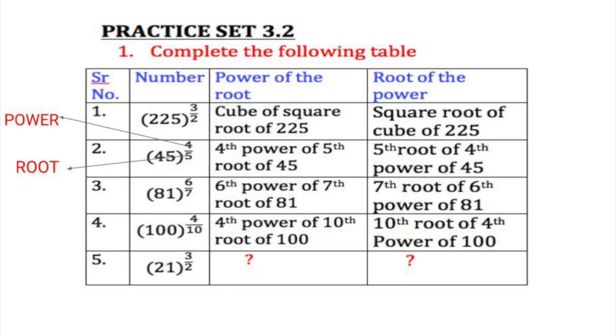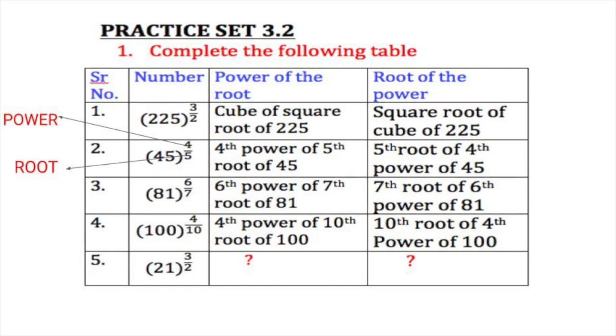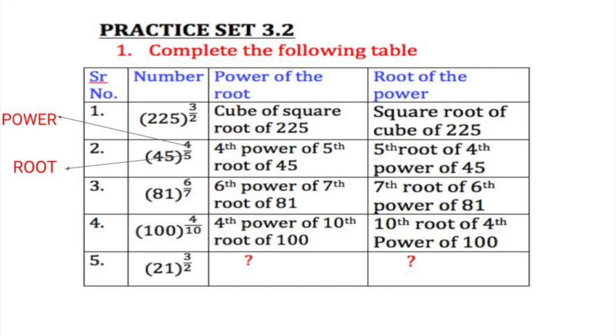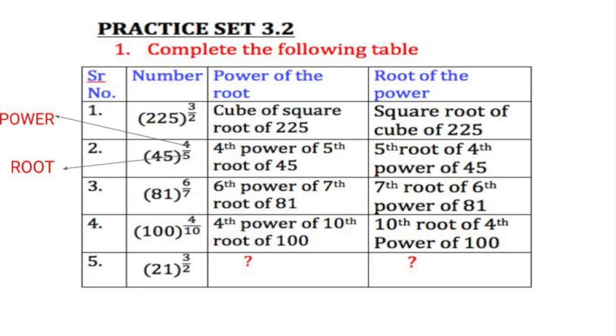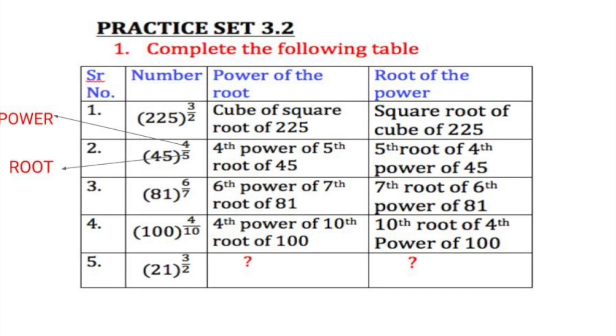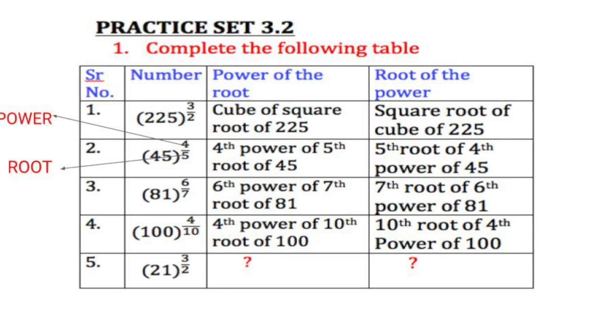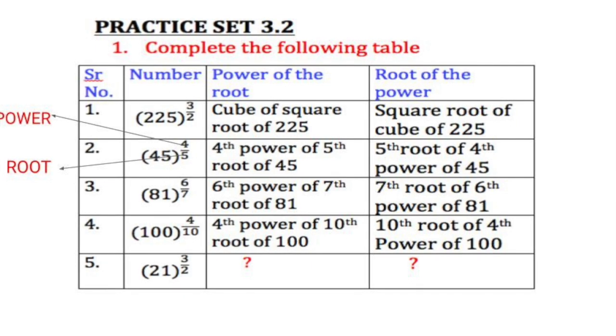When you write in the power form it will be cube of square root of 225. Cube first because it's the numerator it's the power. When you write the root of the power you write square root of cube of 225. Because 2 is the denominator and it is the root.